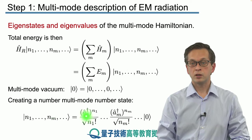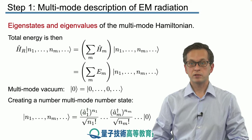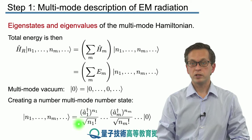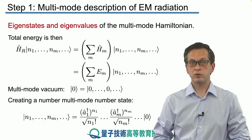And in order to make sure that the whole state is properly normalized, we divide by the factor of square root of n1 factorial, and similarly for the other modes as well.